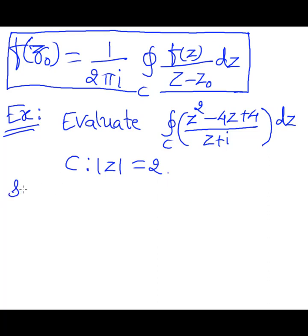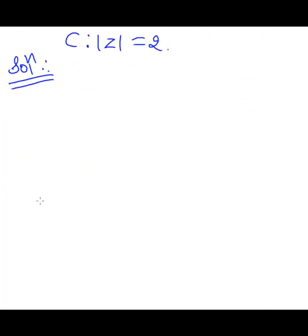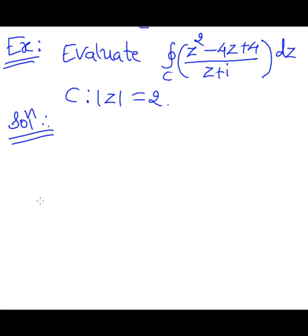How to approach this problem on the basis of Cauchy's integral formula? First of all, let's write that F(z) is z²-4z+4, and z₀, which is nothing but the singularity in this case, is given by -i.